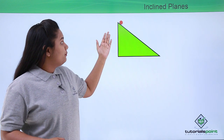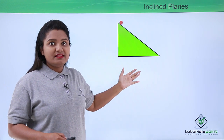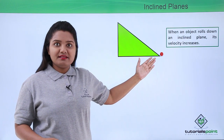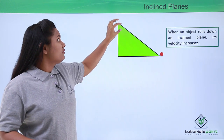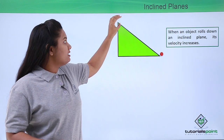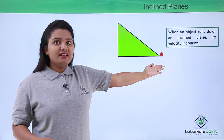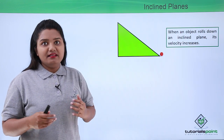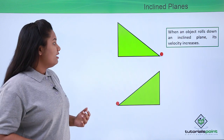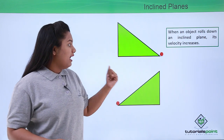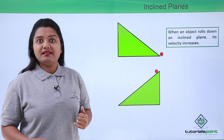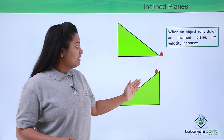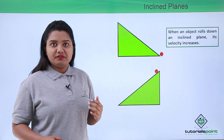When a body rolls down an inclined plane, its velocity increases — it has a certain velocity when it starts rolling, but by the time it reaches the bottom, its velocity has increased. When a body climbs up an inclined plane, its velocity decreases and reaches zero at some point.